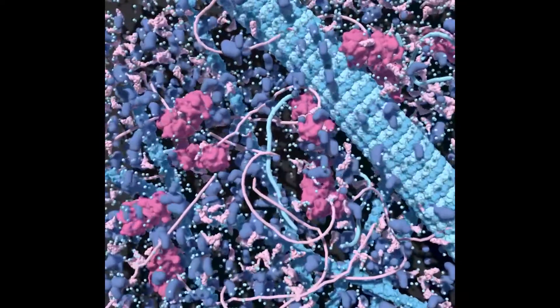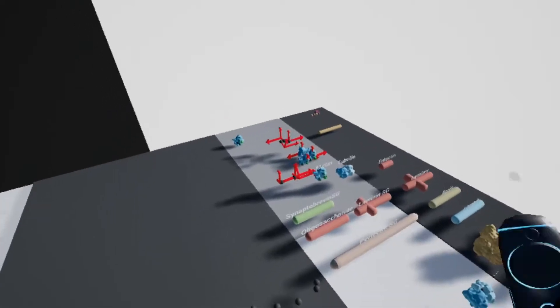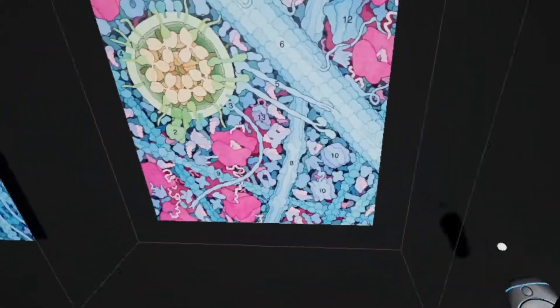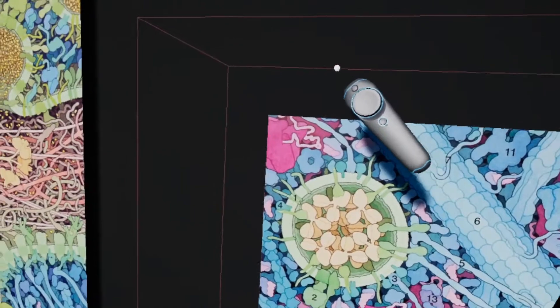We start with the microtubule. We choose a molecular building block tool and select a tubulin dimer. Then, we sketch a microtubule.